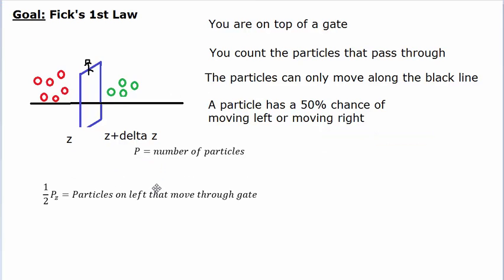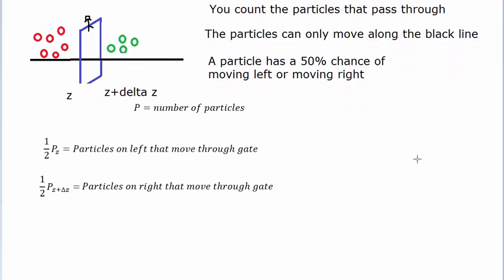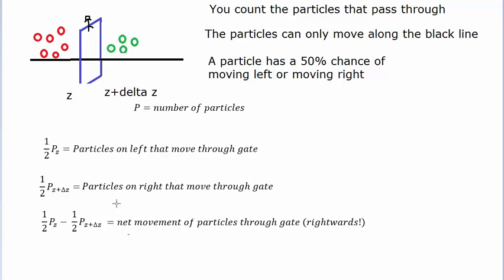If we're counting the particles that pass through the gate, half of the particles on the left-hand side will pass through — so of these six, three will move left and three will move right, meaning three traverse through the gate. Similarly on the right-hand side, half the particles move left through the gate and half move right away from the gate. So if six cars are on the left with three going right, and four cars are on the right with two going left, we have a net movement of one car through the gate to the right. The net number of particles moving right is half of six minus half of four.